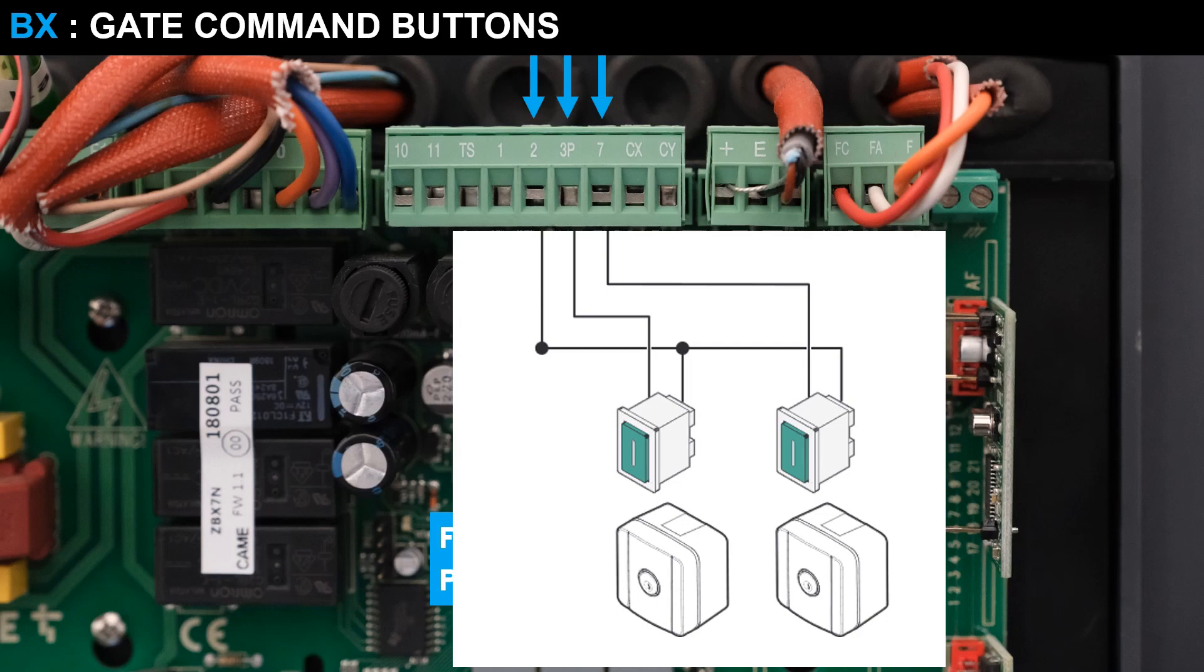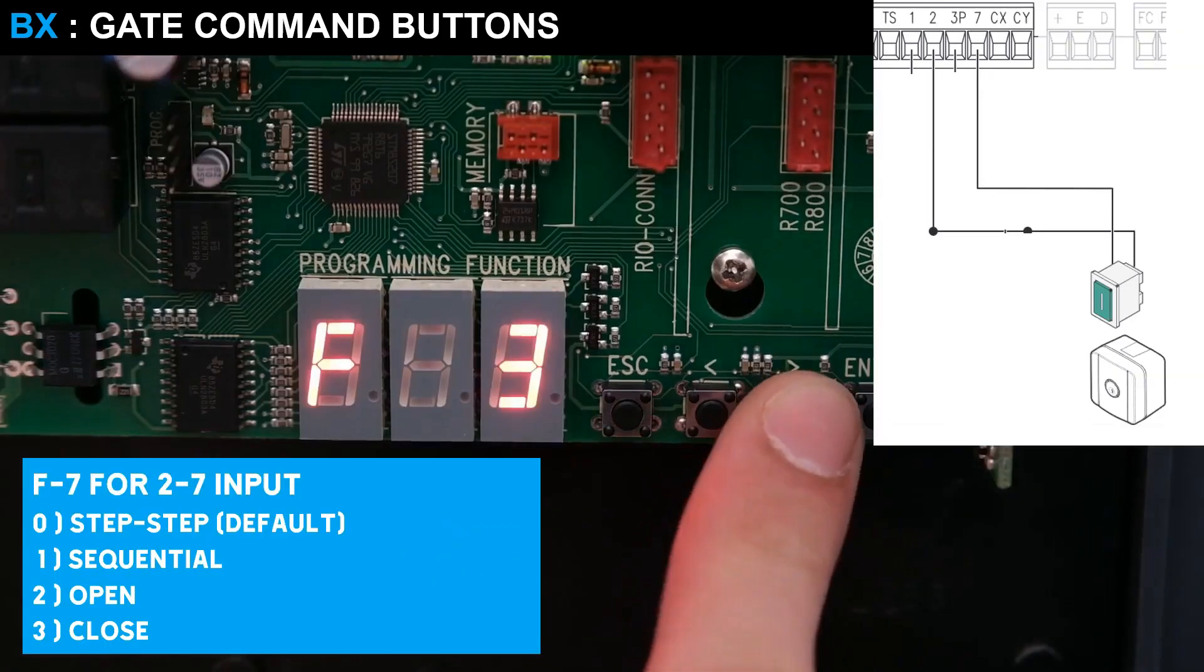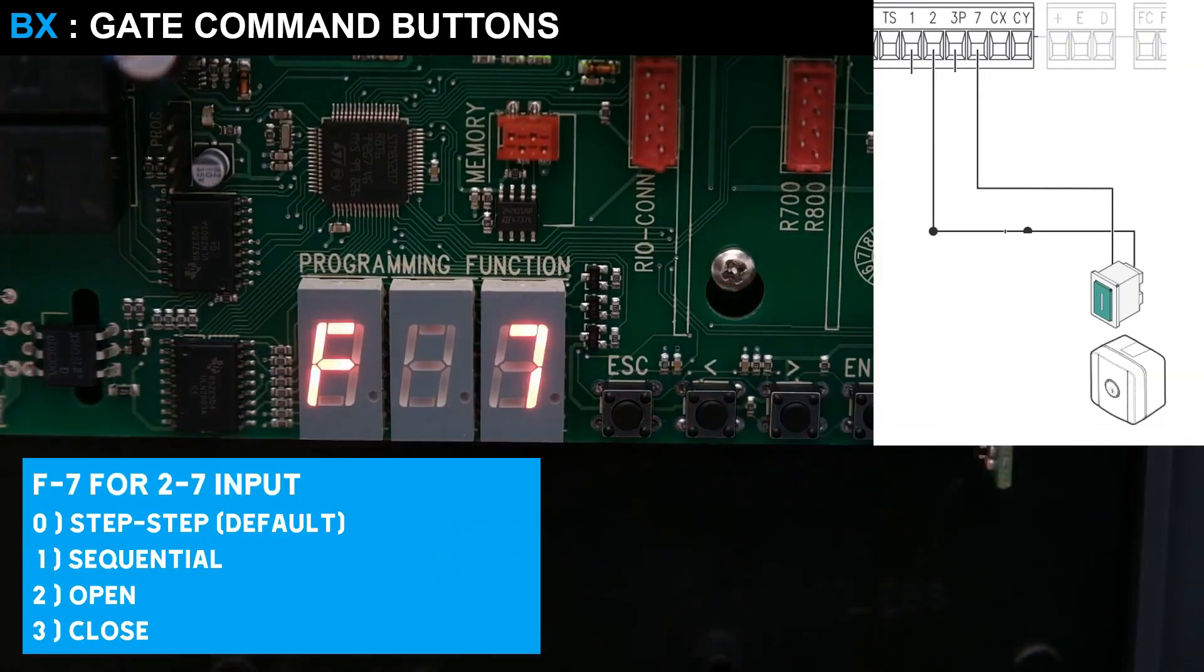To control the gate from a button, it is possible to use terminals 2 and 7 or 2 and 3P. Select function F7 to set input 7 with the functions: step-by-step, sequential, or opening or closing commands.